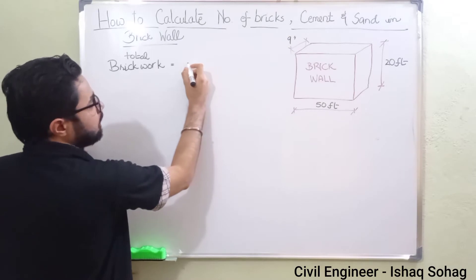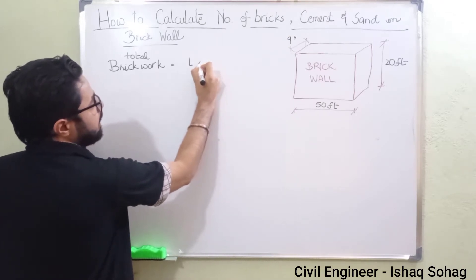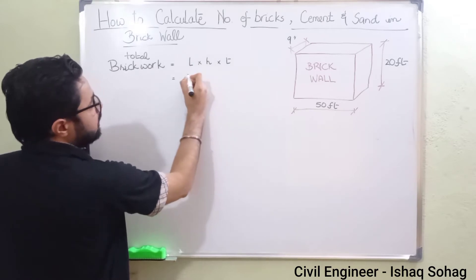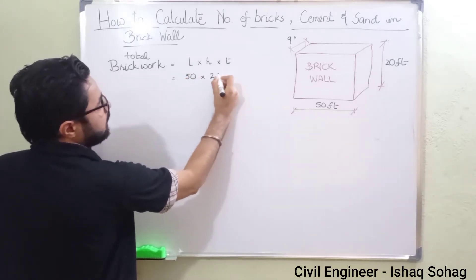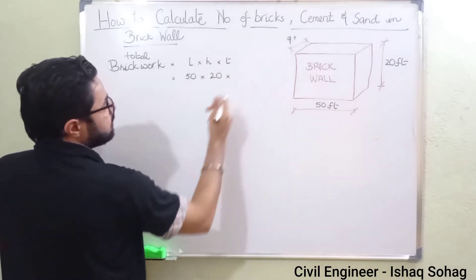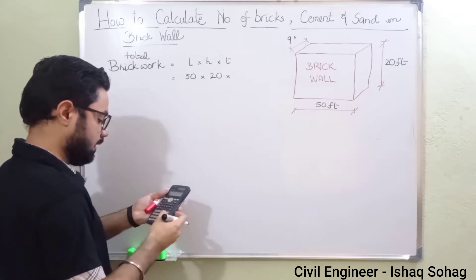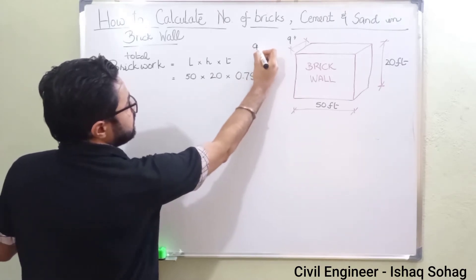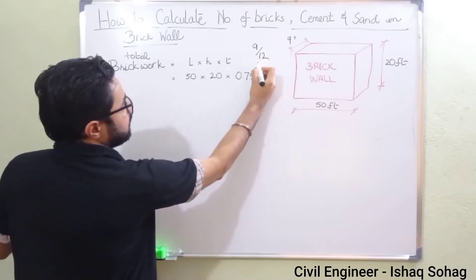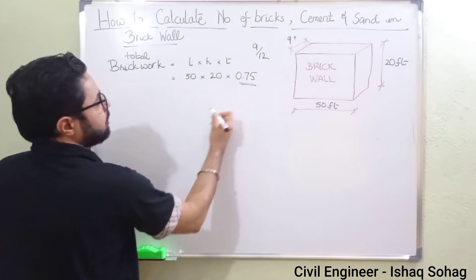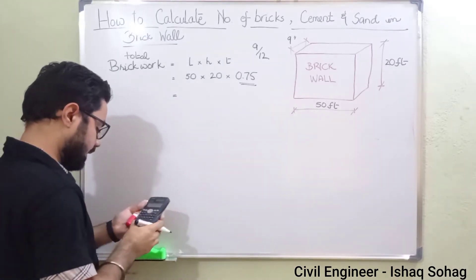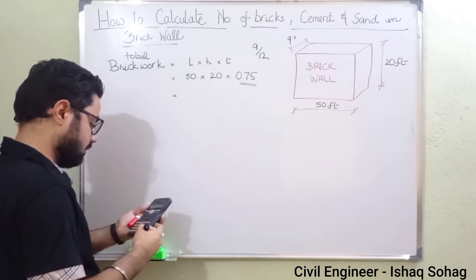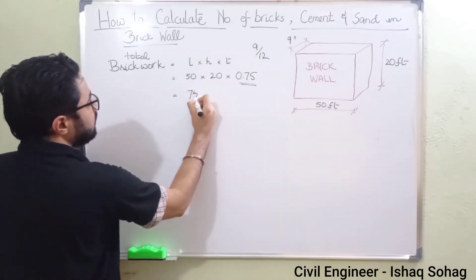The thickness of this brick wall is 9 inches. So I am going to find out the volume first. Volume equals length times height times thickness. The length is 50 feet, so: 50 × 20 × (9/12). We convert 9 inches to feet by dividing by 12, giving 0.75. So 50 × 20 × 0.75 gives us 750 cubic feet.